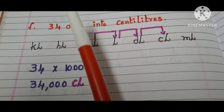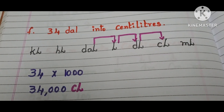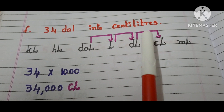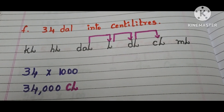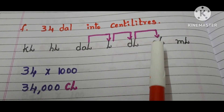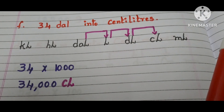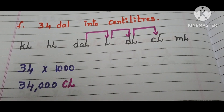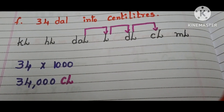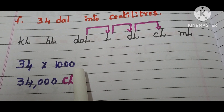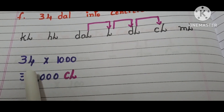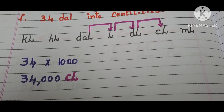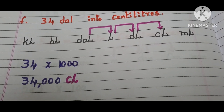Part (f): 34 decaliters into centiliters. The question is given in decaliters and we have to convert them into centiliters. Where are decaliters in the table? Here it is. Where are centiliters? Here it is. We move 3 steps towards the right side, so we multiply by 1000. 34 times 1000 is 34,000. The answer is 34,000 centiliters.